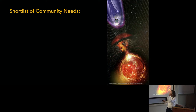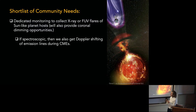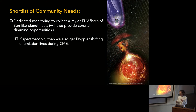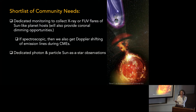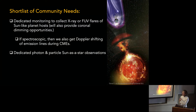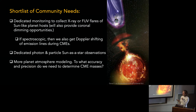Here's a short list of community needs. We need dedicated monitoring to collect X-ray and far-UV flares from sun-like stars — because we are building up these correlations — and somehow figure out how to do this with M-stars. If we can do this spectroscopically, we can try both the coronal dimming and the Doppler shifting simultaneously, which would help confirm that candidate detections are indeed real. I would also love to see dedicated sun-as-a-star observations, since most heliophysics missions are not designed for that format.